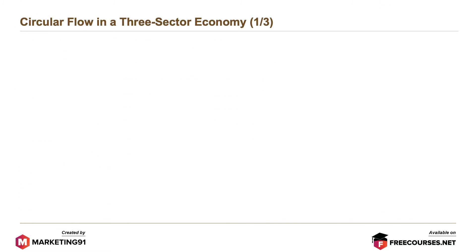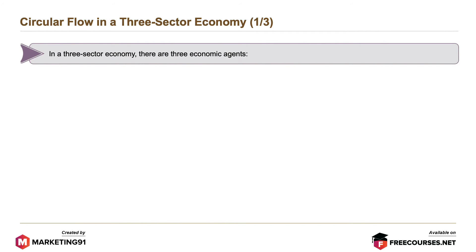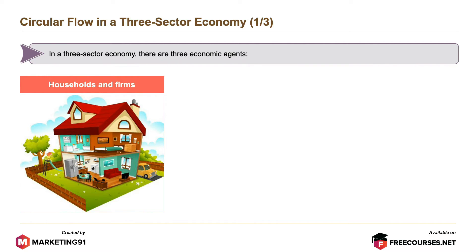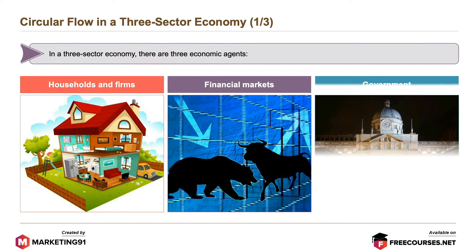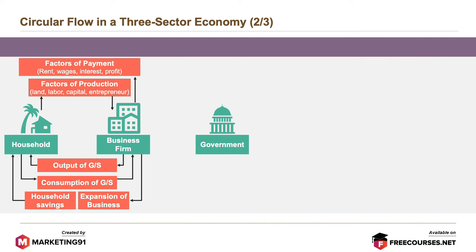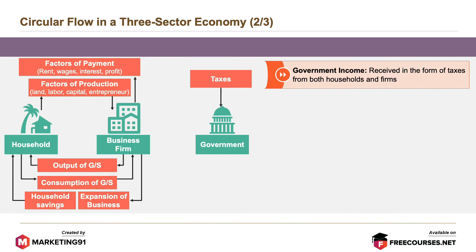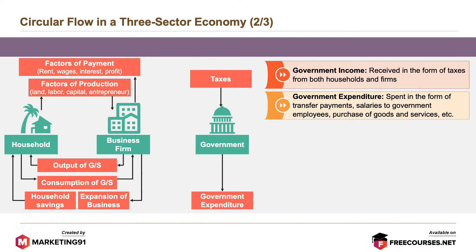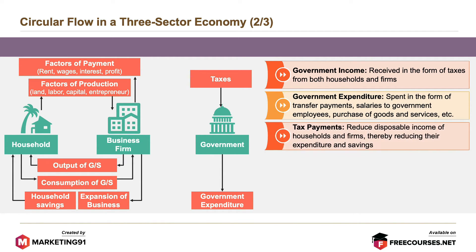Next is circular flow in a three-sector economy. In a three-sector economy, there are three economic agents: households and firms, financial markets, and government. In this circular flow, government income is received in the form of taxes from both households and firms. Government expenditure is spent in the form of transfer payments, salaries to government employees, purchase of goods and services, etc. Tax payments reduce disposable income of households and firms, thereby reducing their expenditure and savings.